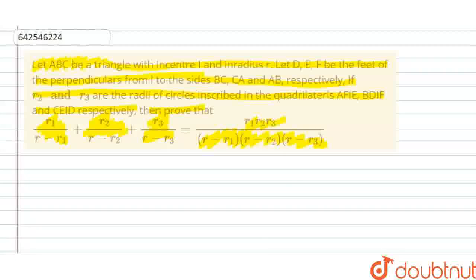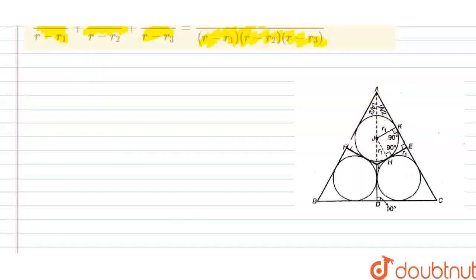I am drawing down the diagram as per the given information. This is the diagram as per the given information. Now we can observe that JKEH is a square.